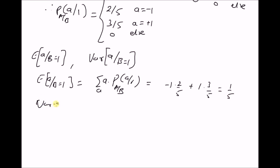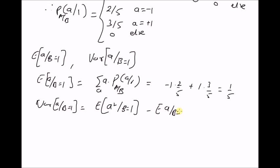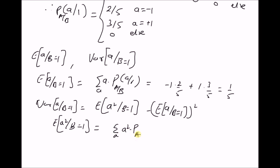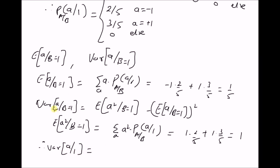Similarly, the variance of A given B equal to 1 is defined as E[A² | B=1] minus (E[A | B=1])². The second moment E[A² | B=1] equals 1 times 2/5 plus 1 times 3/5, which equals 1. Therefore, the variance of A given B equal to 1 equals 1 minus (1/5)², which equals 1 minus 1/25, that is 24/25.